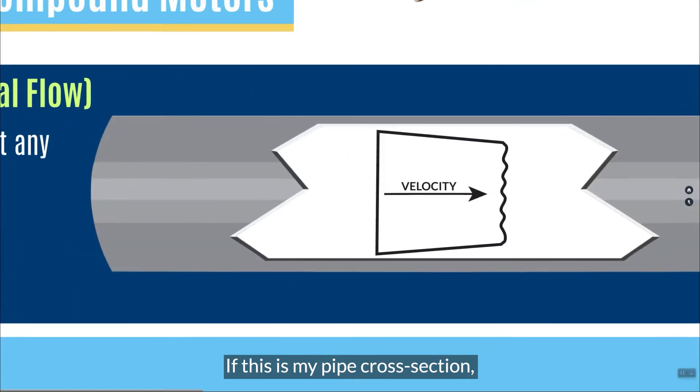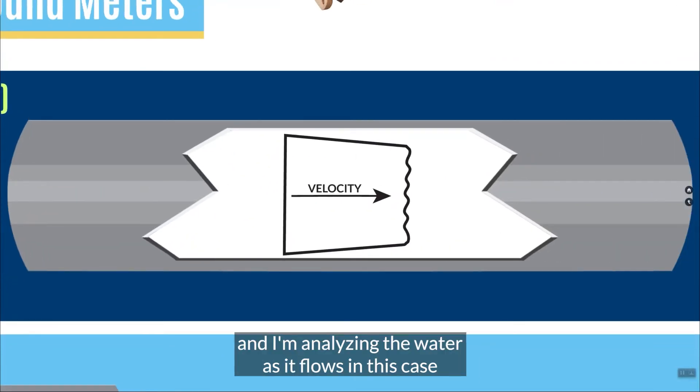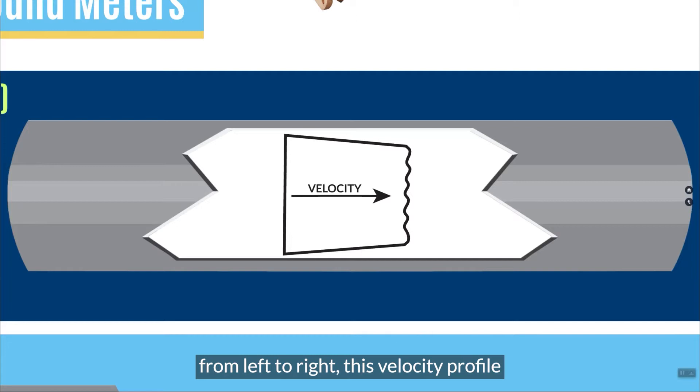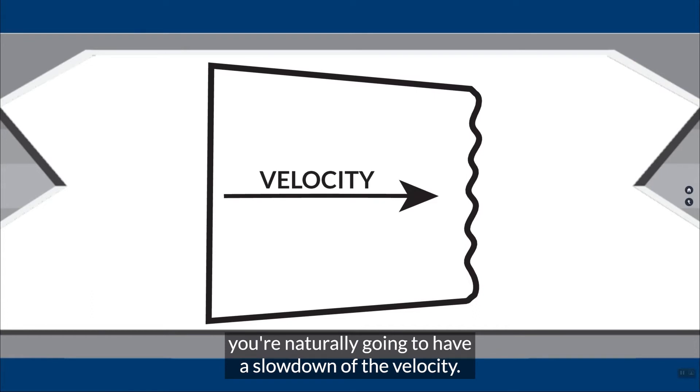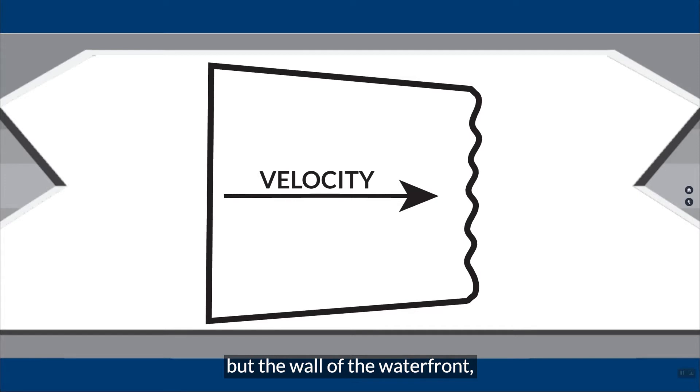So let's take a look at the pipe. If this is my pipe cross-section, and I'm analyzing the water as it flows, in this case, from left to right, this velocity profile shows that near the pipe walls, you're naturally going to have a slowdown of the velocity. So you see there's a little taper there, but the wall of the waterfront, as it goes down the pipe, is relatively steady. There's a little bit of a change in velocity, but it's relatively flat, relatively steady. It's going to approach the turbine element in this flat manner.